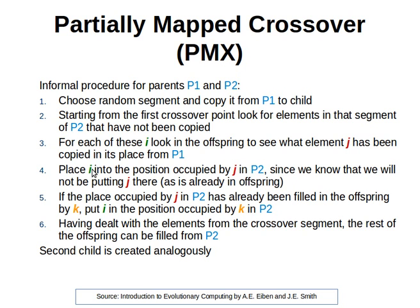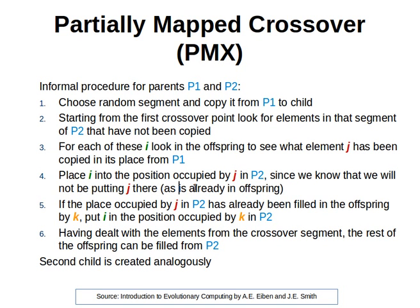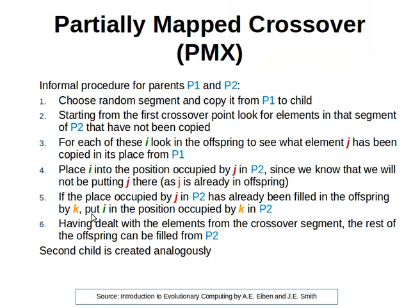What we do now is place I into the position occupied by J in P2, since we know we will not be putting J there as it's already in the offspring. If the place occupied by J in P2 has already been filled in the offspring by an element K, then we put I in the position occupied by K in P2. Having dealt with the elements from the crossover segment, the rest of the offspring can be filled from the second parent directly into their corresponding positions.